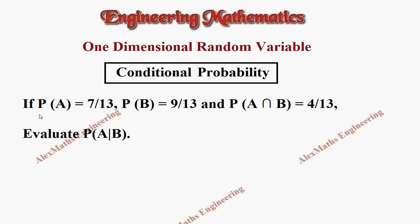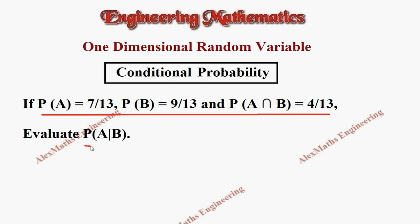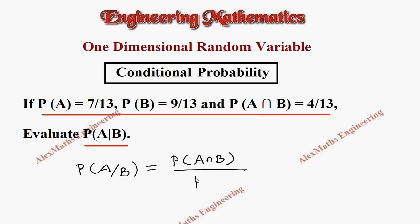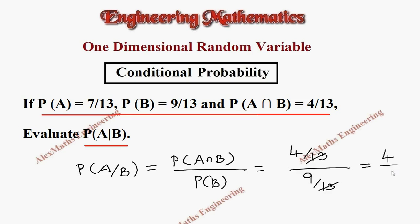In this question, they have given P(A), P(B), and P(A∩B), and they want P(A|B). By formula, P(A|B) = P(A∩B) / P(B). The values are (4/13) divided by (9/13). After simplification, we get 4/9.